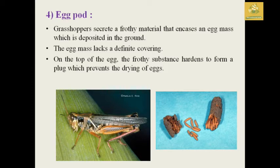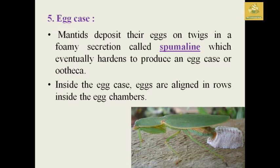Egg pods are mainly formed by grasshoppers, which secrete a frothy material that encases an egg mass deposited on the ground. The egg mass lacks a definite covering; the frothy substance hardens to form a plug which prevents drying of the eggs in the soil.